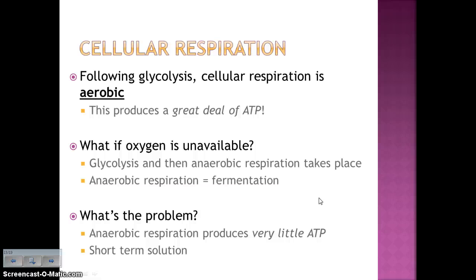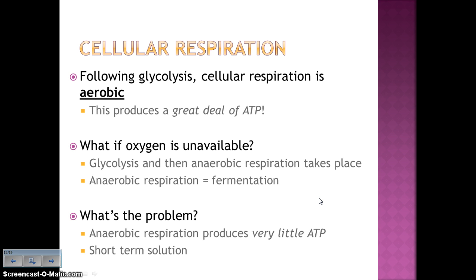But sometimes oxygen is unavailable. For example, if you're a cross-country runner who's been running for a long time and has depleted the oxygen in your muscles, there has to be a way to continue producing ATP for a short time. So if oxygen is unavailable, glycolysis takes place and then anaerobic respiration — also called fermentation — takes place instead of the rest of cellular respiration. Anaerobic respiration is only a short-term solution because it produces very little ATP compared to aerobic cellular respiration.